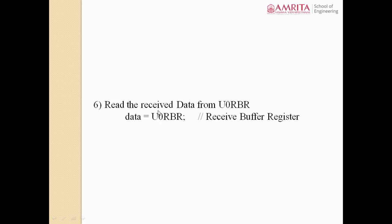In UART reception, there is a shift register known as the receiver shift register — it is a serial-to-parallel shift register. In transmission, the transmitter shift register is a parallel-to-serial shift register, but in the UART receiver, the receiver shift register is serial-to-parallel — opposite of transmission. Whatever data arrives serially is shifted into the shift register based on the baud clock, converting serial data into parallel data.